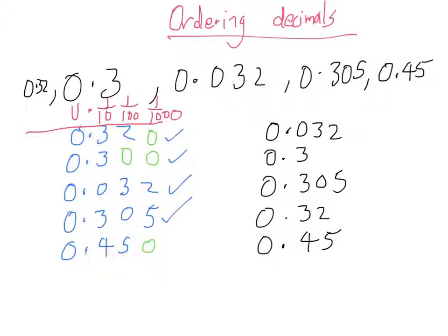300, 32, 305, 450 and order it like that. But remember to make sure that units are the same value. Thank you.